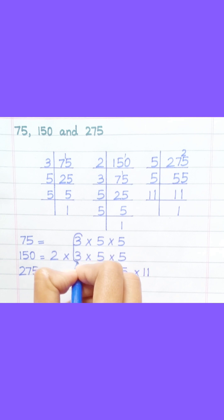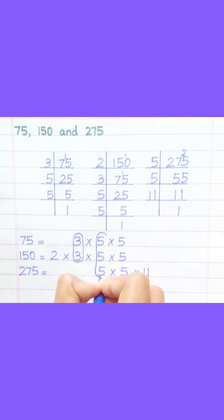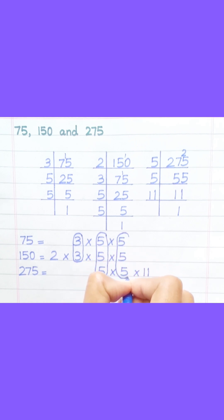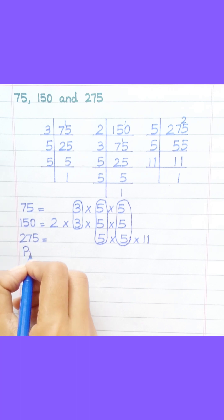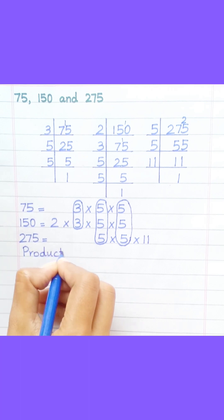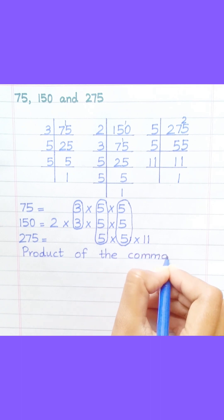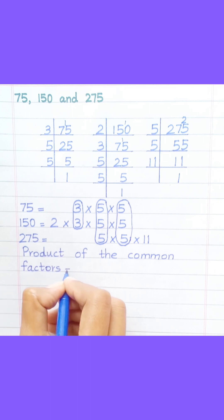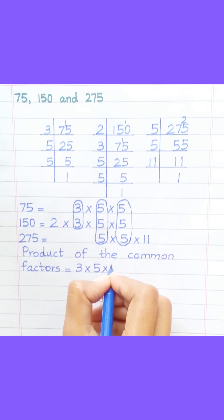Loop the factors that are common to all of the given numbers. 75, product of the common factors, equals 3 multiply 5 multiply 5.